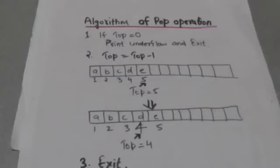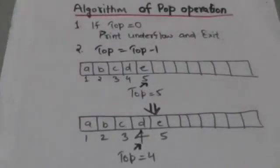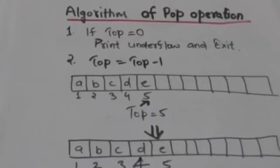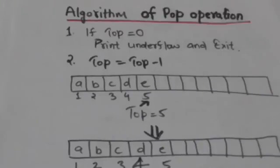Now suppose we have to delete an element from this stack storage. This is the algorithm for performing the pop operation on stack storage. It is assumed that the lower bound of array storage is 1. First, it is checked if top equals 0 or not. If top equals 0, it means the stack is empty and we cannot delete an element from it, so the algorithm will print underflow and stop.